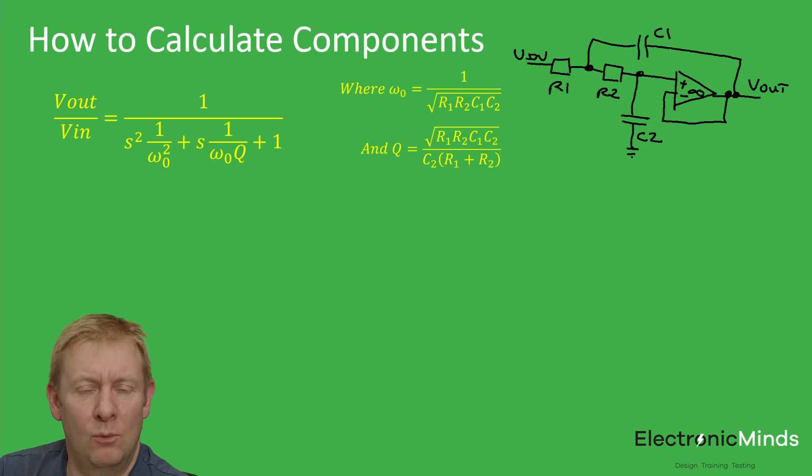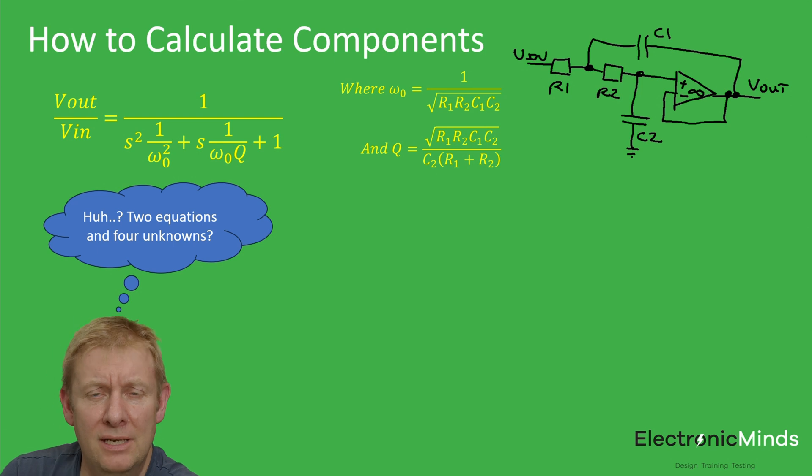We need a methodology to calculate our values of resistors and capacitors based on the desired crossover frequency omega naught and Q factor. The problem is that we have four parameters—two resistors and two capacitor values—but we've only got two equations, so we can't solve that directly.